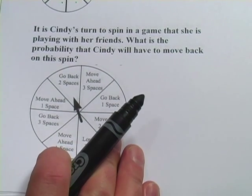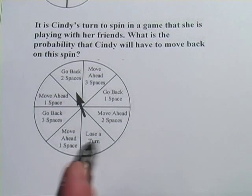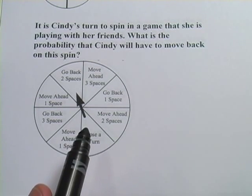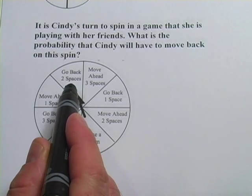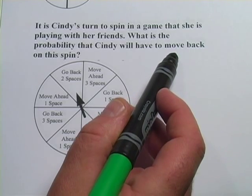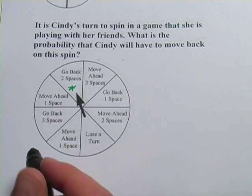Let's look at another one here. This one says, it's Cindy's turn to spin in a game that she's playing with her friends. What is the probability that Cindy will have to move back on the spin? And this one's a little more complicated. We better read the spaces here. This one says, go back two spaces. And they're asking, what's the probability she'll have to move back? So I'm actually going to mark this one special. That makes her go back.